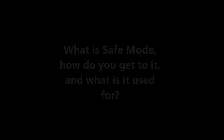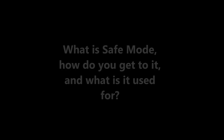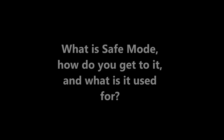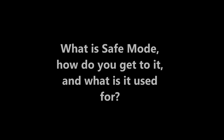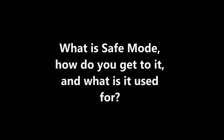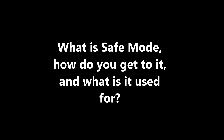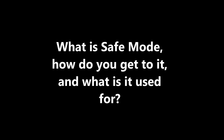Question number three: what is safe mode, how do you get to it, and what is it used for? This is a pretty easy one — basic Windows knowledge. In order to get to safe mode, while the computer is booting up you hit F8, scroll up, and select safe mode. Safe mode is used to troubleshoot issues with drivers and hardware — things you cannot do in normal mode. It's also used to remove viruses safely, since in safe mode you're not connected to anything else.